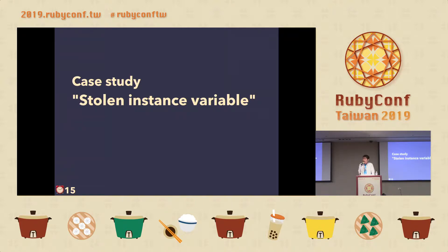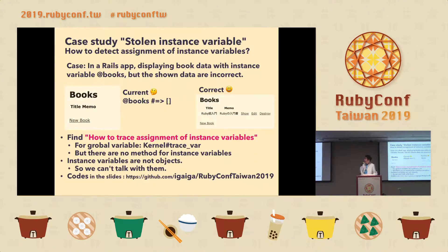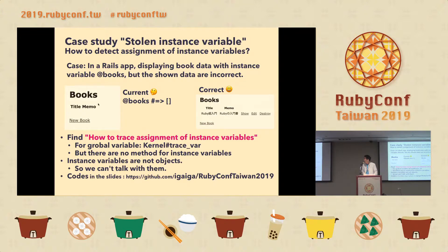Next section is a case study: tracing instance variable assignment. We want to detect assignment of an instance variable. In a Rails app, we are displaying book data with an instance variable at-books, but the shown data are incorrect. We need to find how to trace assignment of instance variables.